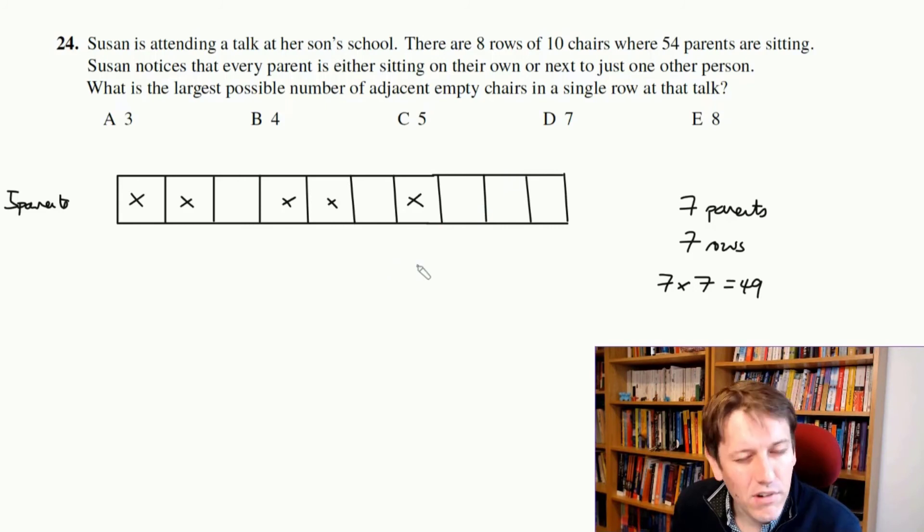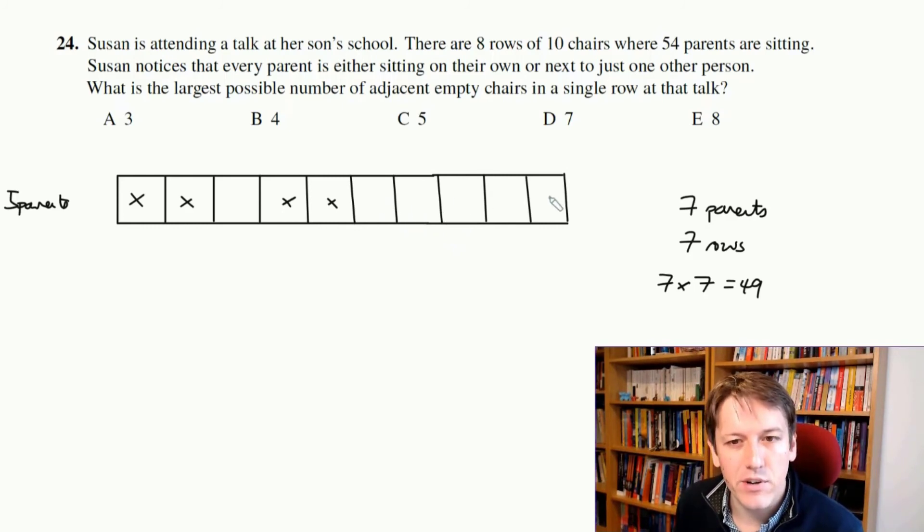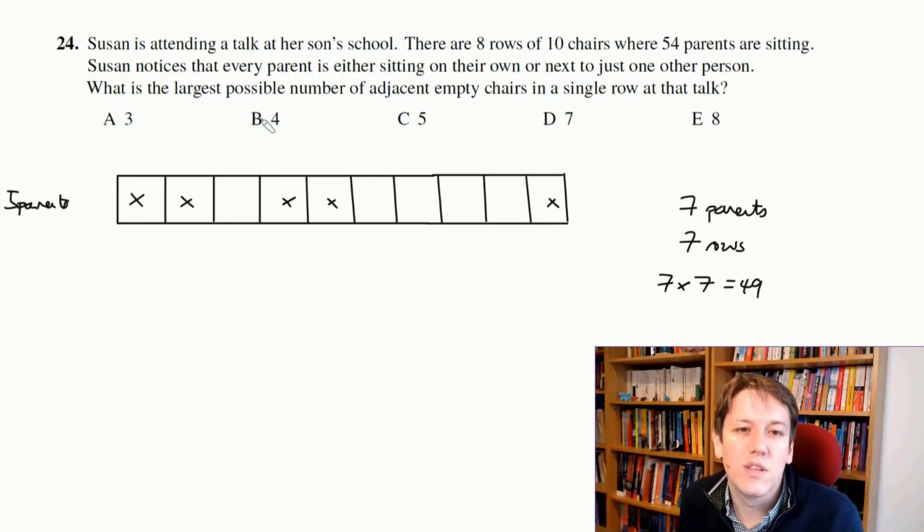Now that leaves a gap of three here, and I just sort of think, is that the best I could do? Is there any way of playing around with this? Well, actually, of course, if I, at the moment, I've got this gap here, if I put that last parent on the end instead of here, then I get a gap of four. And if you play around with this, there's no really no better way we can do this. That's really optimised the situation. I mean, try playing around with it if you're not sure. But that's the best. And so the maximum possible of adjacent empty chairs there can be is four, and the answer is B.